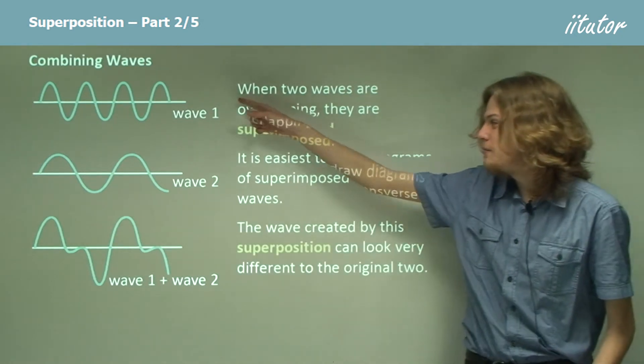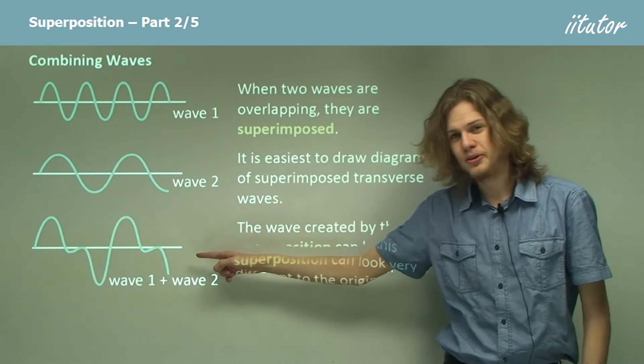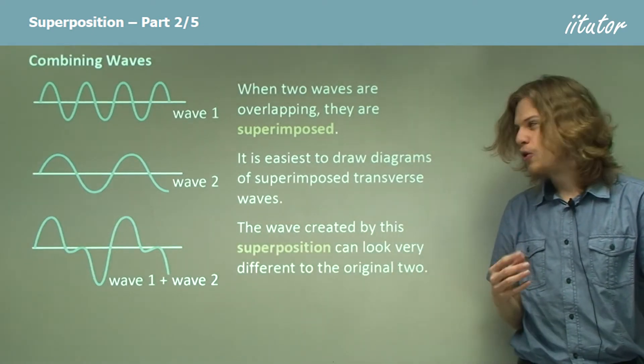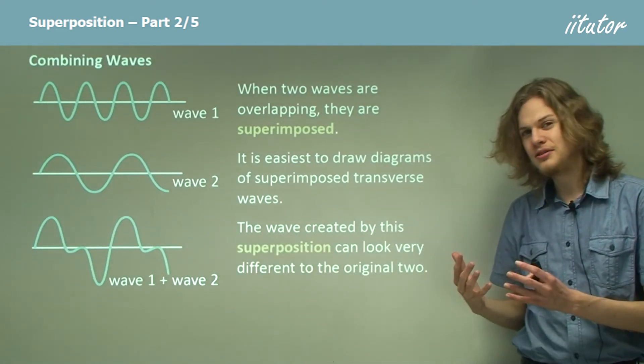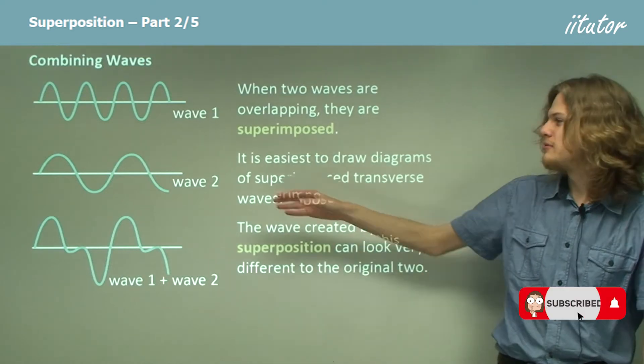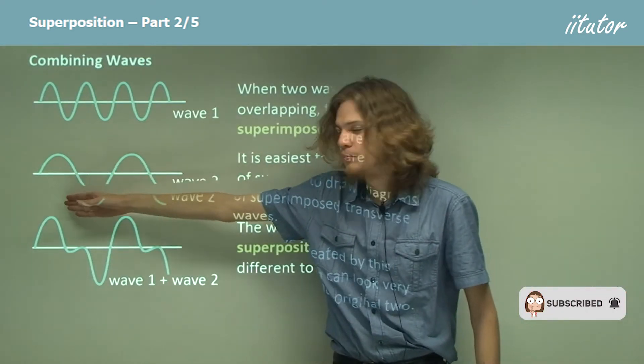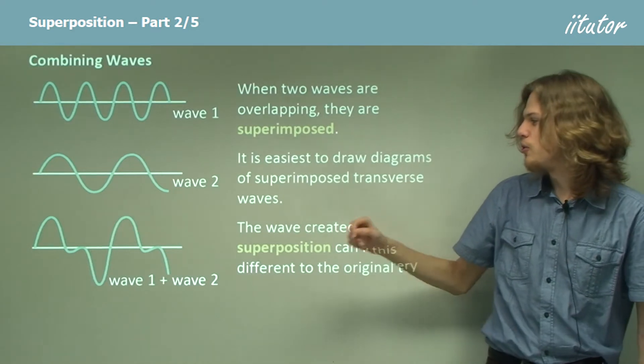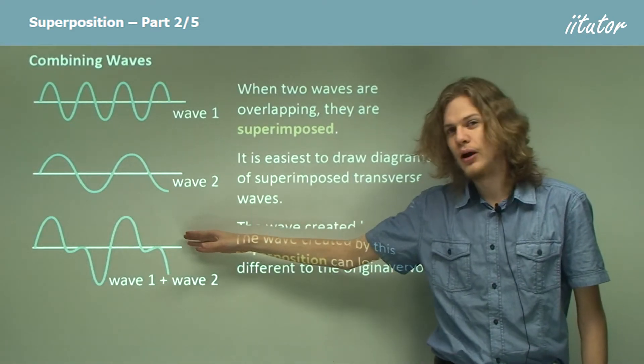superposition of two different waves can end up looking quite different to the original waves, although we can see some similar elements. For example, both waves start off by moving above the x-axis, and so the superposition of the waves